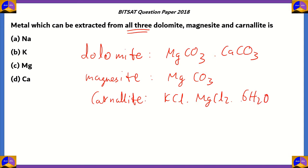In all three ores, magnesium is present: in dolomite it is MgCO₃, in magnesite it is MgCO₃, and in carnalite it is MgCl₂. Therefore option C is correct. Option D (calcium) is present in dolomite only, option B (potassium) is present in carnalite only, and sodium does not occur in any of these. The correct answer is option C — magnesium.